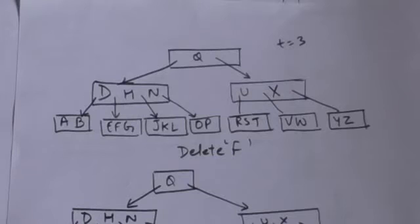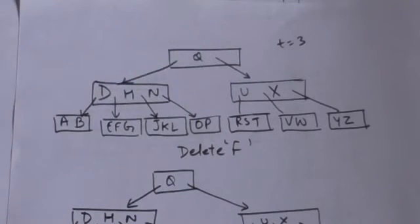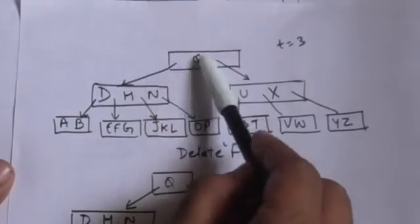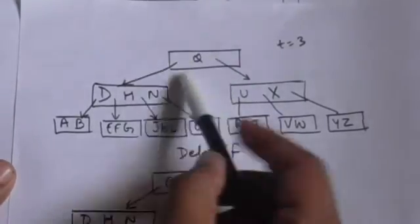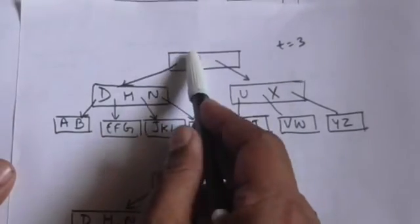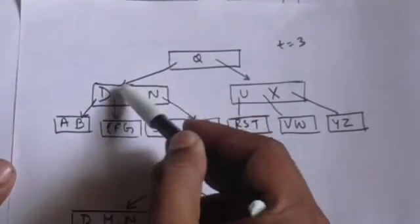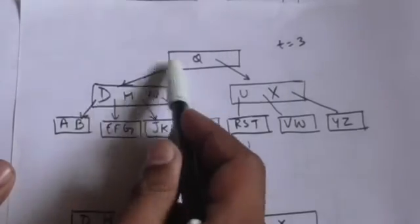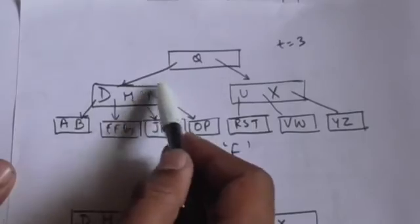Consider this B-tree. The minimum degree of this B-tree is T=3, so each node will have at least two keys. Suppose we have to delete key F. We start from the root node. The root has only one key, Q, and F is less than Q, so we move to the child at the left of key Q. This child node has more than two keys, so we can move to it.